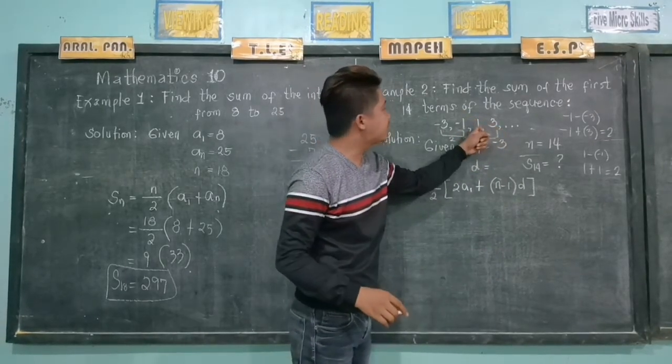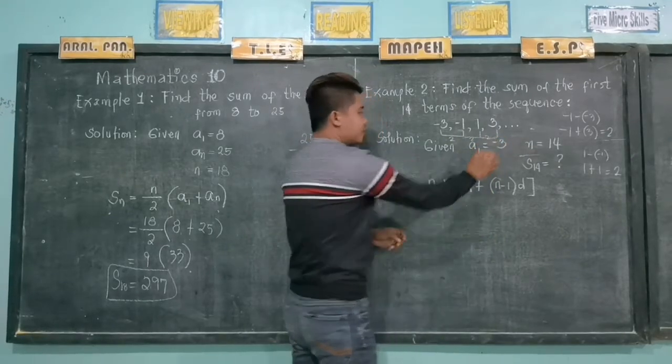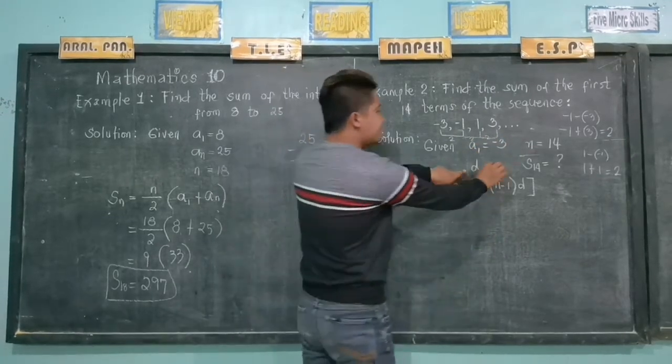3 minus 1, of course, this is 2. So therefore, our d now is 2.